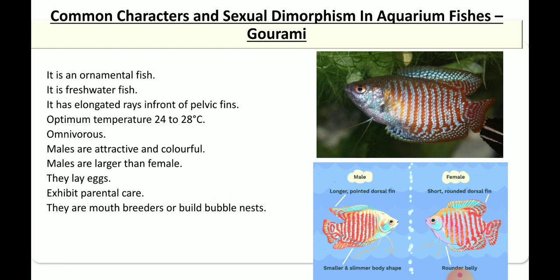Regarding sexual dimorphism: males have longer and pointed dorsal fins, whereas females have shorter and rounded dorsal fins. In body shape, males are slimmer, whereas females have a rounded belly region. These are the sexual dimorphic characters by which you can differentiate males and females of gourami.